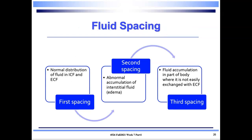Regarding fluid spacing: first spacing is the normal distribution of fluid in the intracellular and extracellular compartments. Second spacing is abnormal accumulation of interstitial fluid — this is edema. Third spacing is fluid accumulation in parts of the body not easily exchanged with extracellular fluid, such as ascites in the abdomen, pleural effusions in the pleural space, and cardiac or pericardial effusions.